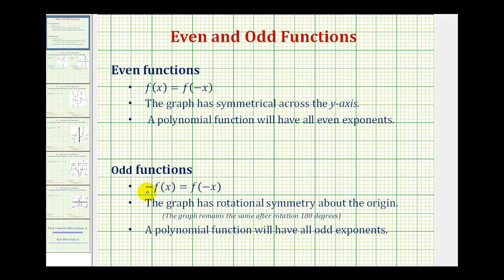For odd functions, algebraically -f(x) is equal to f(-x), and graphically the graph has rotational symmetry about the origin, which means the graph remains the same after a rotation of 180 degrees. A polynomial function that is odd will have all odd exponents on the variable.